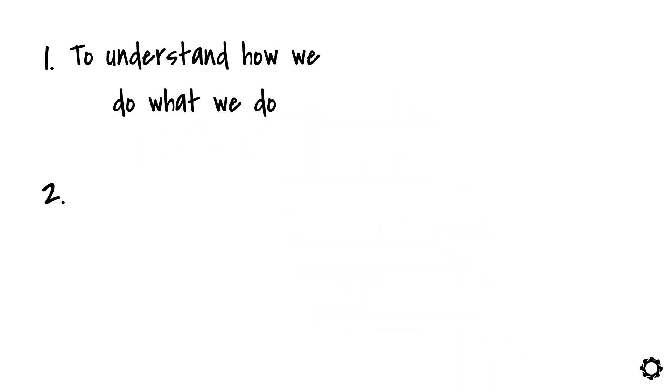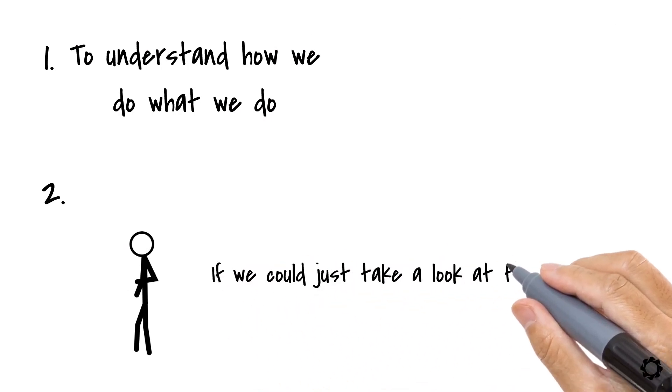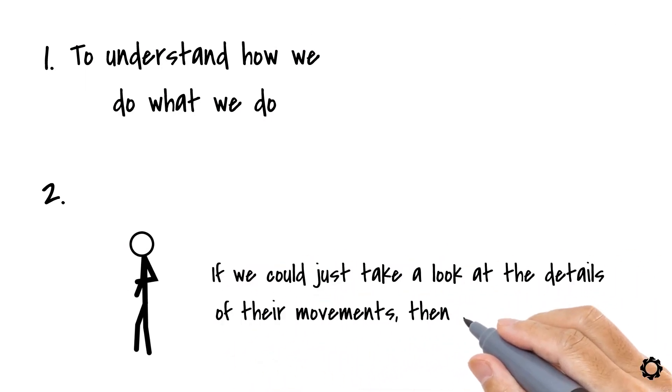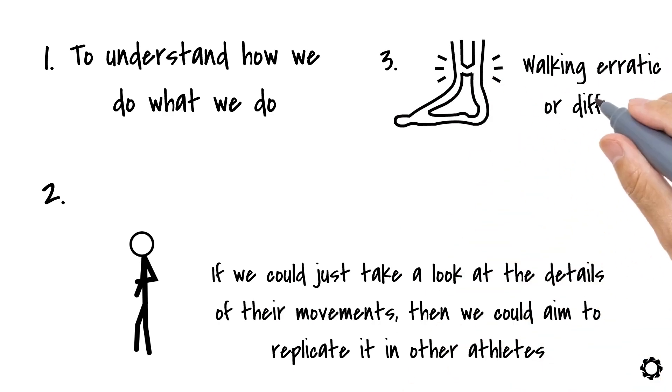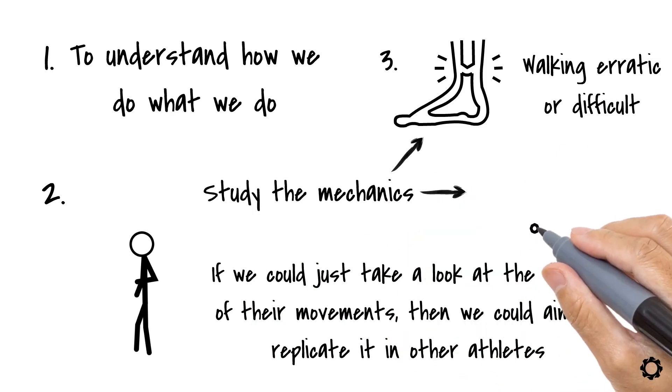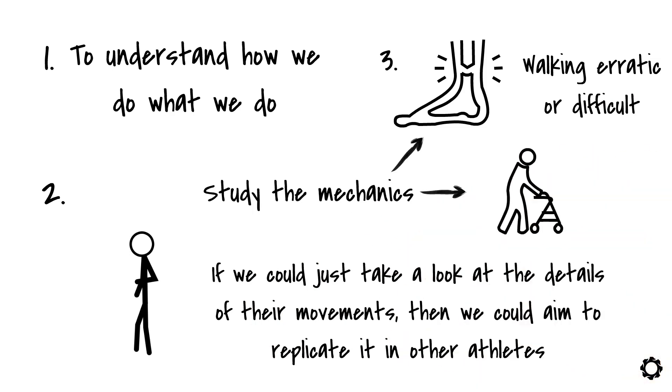If we could just take a look at the details of their movements, then we could aim to replicate it in other athletes. Third, imagine that a person has a condition that makes their walking erratic or difficult. Research groups study the mechanics of this erratic movement to suggest apparatuses or therapies to help alleviate that condition.